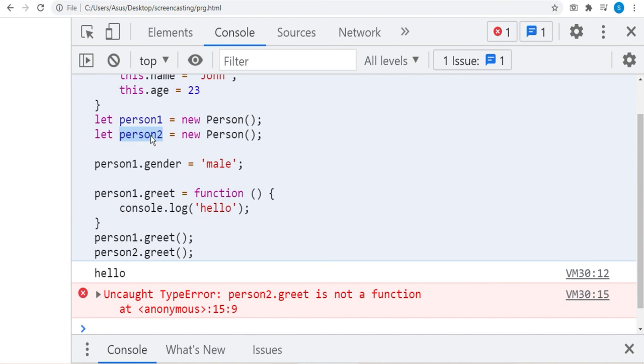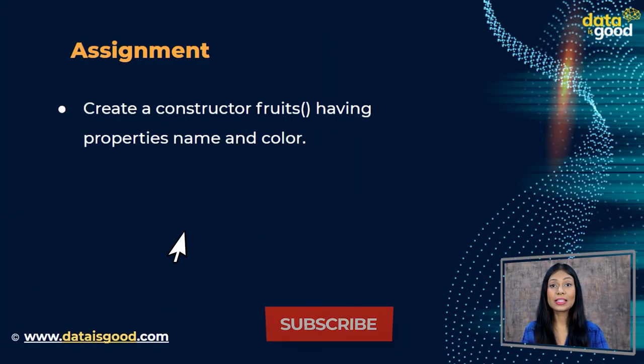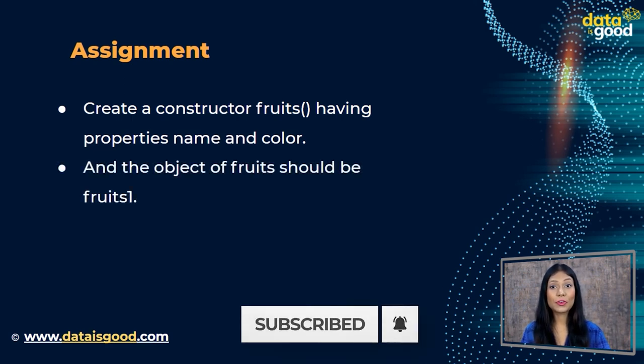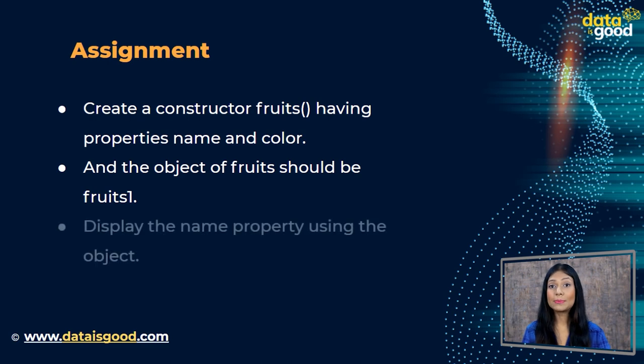That is the detailed explanation of constructors. Here is a simple assignment for you: create a constructor 'Fruits' having properties name and color, with the object of Fruits being 'fruits1'. Display the name property using the object. That is it for today — I will meet you very soon in the next lecture with some really amazing concepts of objects. Until then, take care, bye!